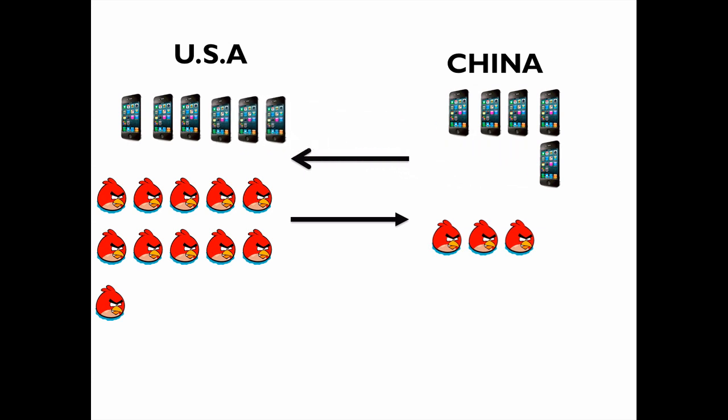After this trade, the US gets three iPhones from China and is able to consume six iPhones and 11 Angry Birds — which is one more iPhone and one more Angry Bird than they were consuming before. China on the other hand is able to consume five iPhones and three Angry Birds, which is one more iPhone and one more Angry Bird than before.